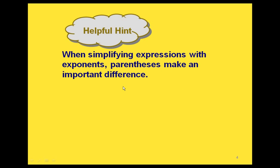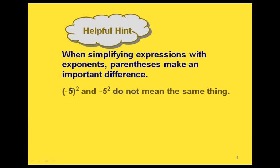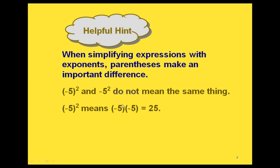A hint for working with these is that if you have exponents, the parentheses make an important difference. If we have parentheses around a negative number like this and we're squaring it, that's going to give us a different answer than if we don't have parentheses. So these two expressions don't mean the same thing. If we take negative 5 and square it, that means we're multiplying negative 5 times negative 5, and we end up with a positive 25.